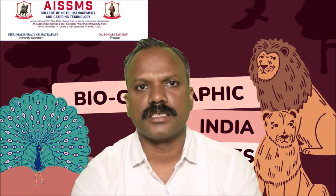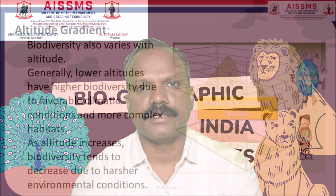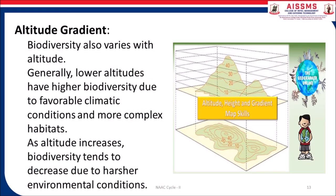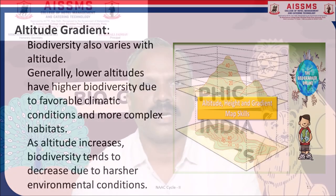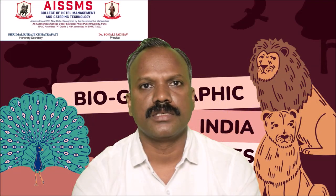Now, let's discuss the altitude gradient. Biodiversity also varies with altitude. Generally, lower altitudes have higher biodiversity due to favorable climatic conditions and more complex habitats. As altitude increases, biodiversity tends to decrease due to harsher environmental conditions.